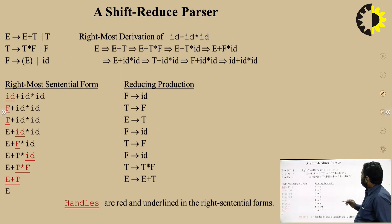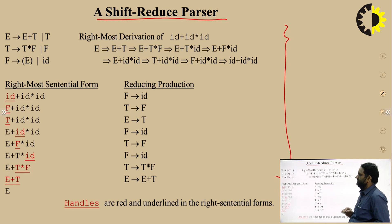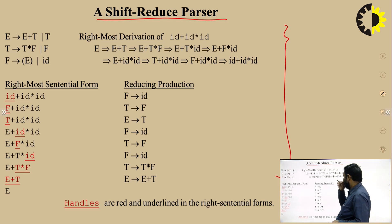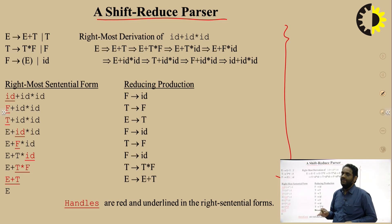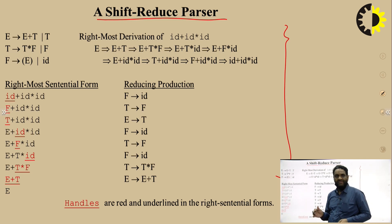What is a Shift-Reduce Parser? There are four possible actions: Shift, Reduce, Accept, and Error. Shifting means the symbol is pushed onto the stack used in implementing the Shift-Reduce Parser. Reduce means reducing a symbol or collection of symbols into a valid non-terminal using a production rule. For example, with the input string id + id * id, in the first case id is converted to F using the sixth production rule.